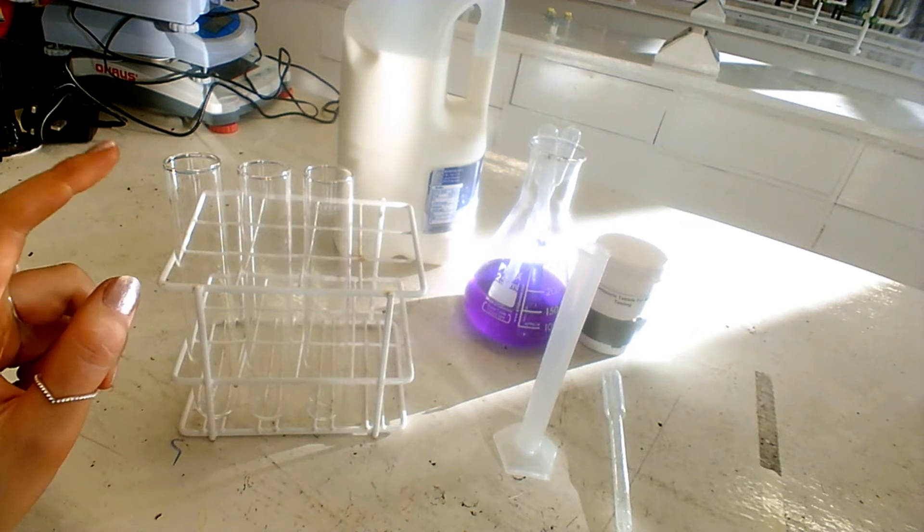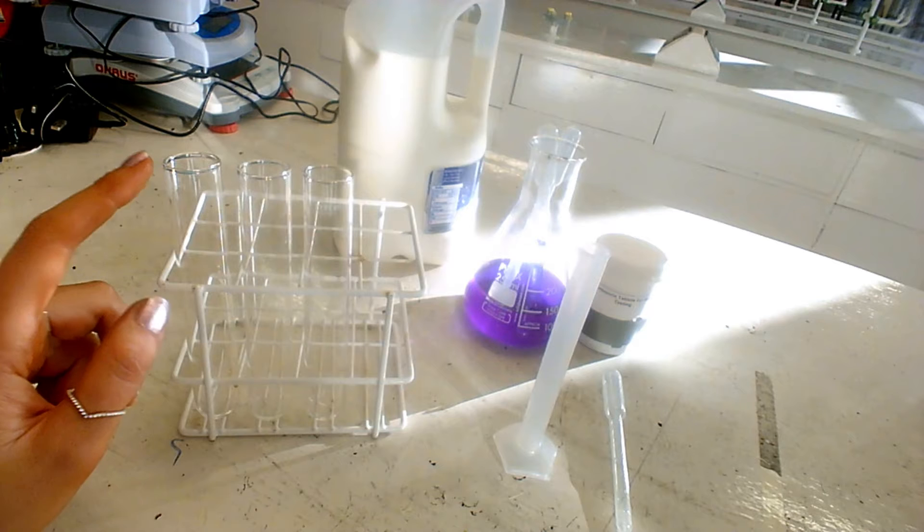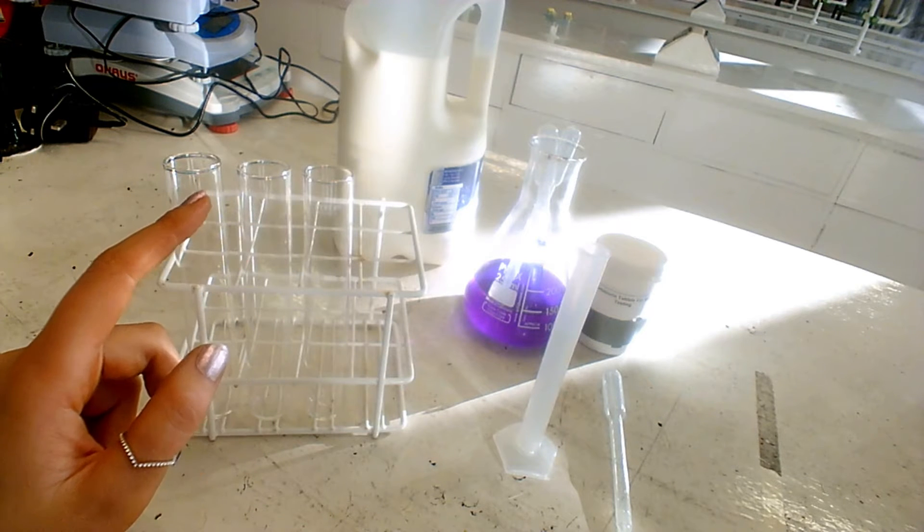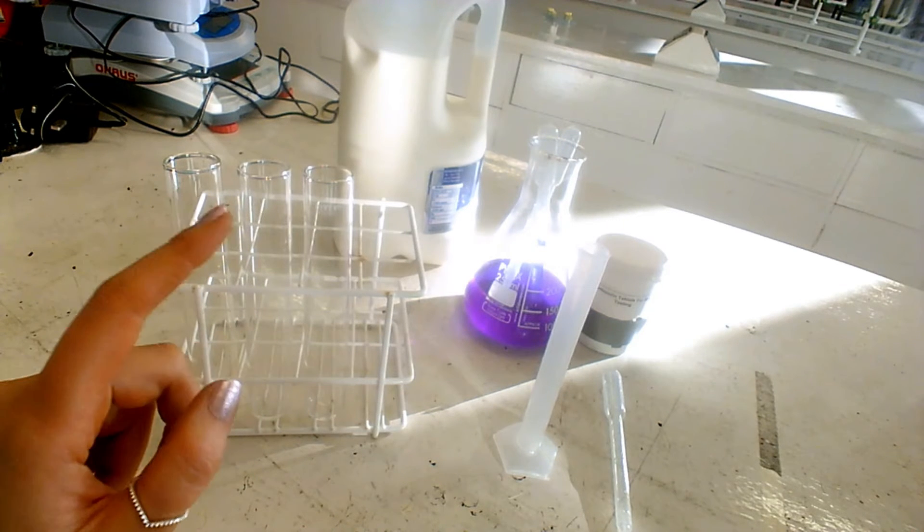The first thing I need to do is label my three test tubes A, B, and C, and then I'm going to add 10 ml of the same sample of milk to each test tube.